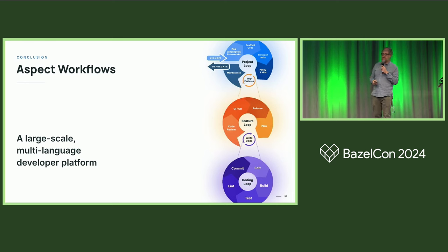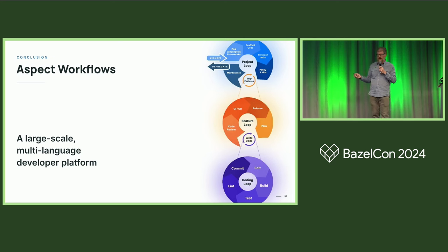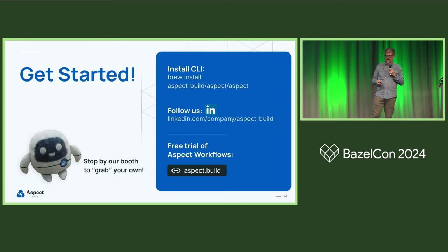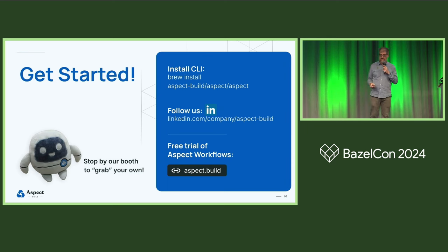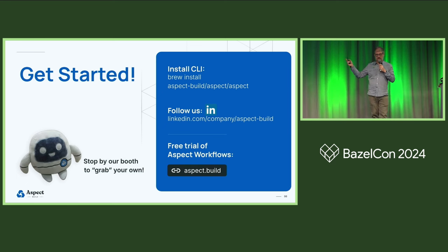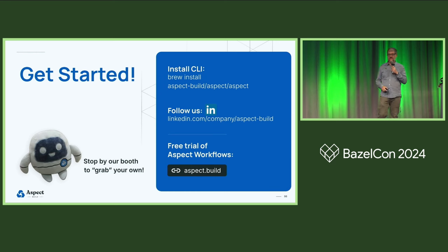So in only 10 minutes, it was a difficult task to go through all of these loops. I hope this was a good representation of what I mean when I say a developer platform — this is the scope of what we would like to solve for you. If you haven't gotten to Marvin already, come by our booth and use the claw machine. Install our CLI with Brew if you're on a Mac. Follow us on LinkedIn to get more updates. And we would love to sign many of you up for a free trial of our Workflows product. Thank you very much.